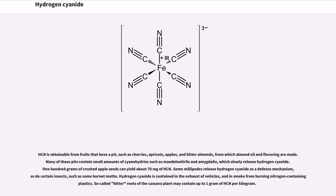Some millipedes release hydrogen cyanide as a defense mechanism, as do certain insects such as some burnet moths. Hydrogen cyanide is contained in the exhaust of vehicles and in smoke from burning nitrogen-containing plastics. So-called bitter roots of the cassava plant may contain up to one gram of HCN per kilogram.